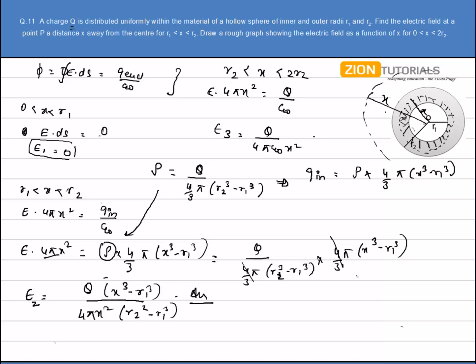I can easily draw the graph now. The electric field for the first distance - this is x, this is electric field. When x varies from 0 to R1, E is 0, so it will be like this. Then suddenly it begins up to a value, goes like this, and goes like this. This is the answer.